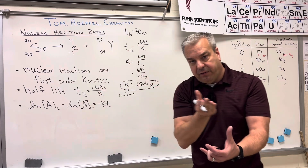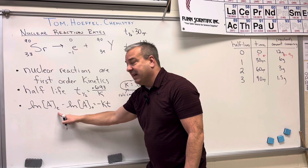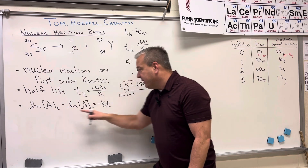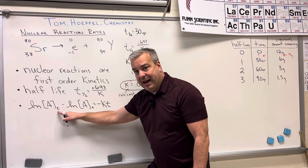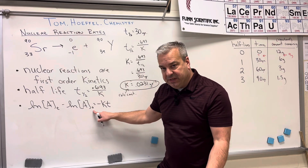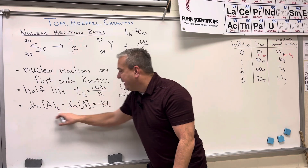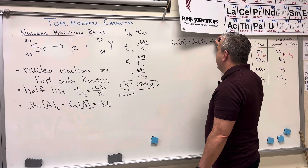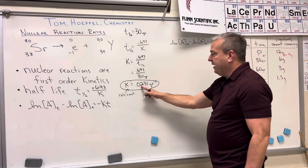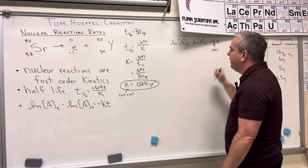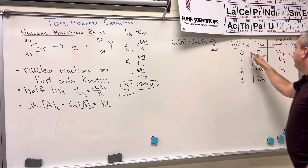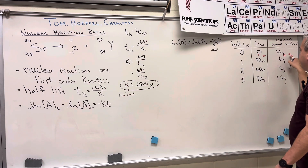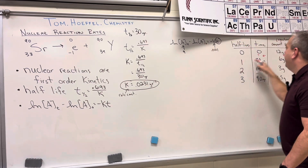That rate constant is used in the integrated rate law equation: ln(At) − ln(A₀) = −kt. This tells us the natural log of the amount at time t, where A₀ is the initial amount at time zero. We plug in k = 0.0231, the amount at time t is nine grams, and the initial amount is 12 grams.